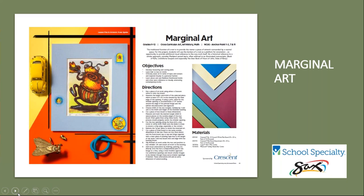This next lesson is called Marginal Art. The artwork and lesson plan was created by Franz Spoon from Canton, Michigan, and was sponsored by Crescent Matte Boards. Franz wanted to do something a little different — while the traditional function of a mat is to provide the viewer a piece of artwork surrounded by neutral space, for this project he used the borders of the mat as a platform for annotation, an opportunity to provide additional visual reference to the very work itself.